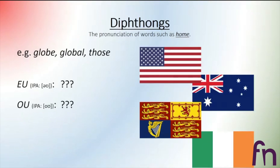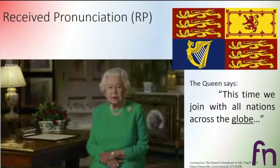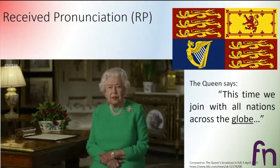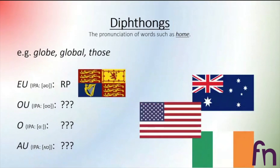The first possibility is something like [oʊ]: 'home', 'globe', 'global', 'those'. The second is [ɔː]: 'globe', 'global', 'those'. The third is long [oː]: 'globe', 'those', 'home'. The fourth is something like [əʊ]: 'globe', 'global', 'those'. Let's hear our native speakers. The Queen says: 'This time we join with all nations across the globe.' She says something like 'globe', so RP pronounces this sound as [əʊ].